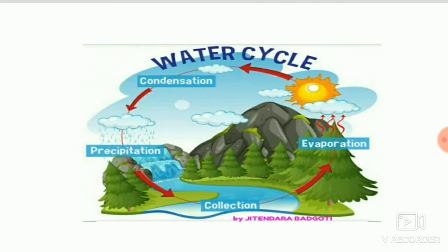This is the diagram of the water cycle. You can see the processes: evaporation, precipitation, and condensation. Thank you friends, bye bye.